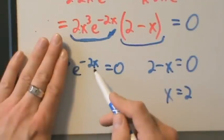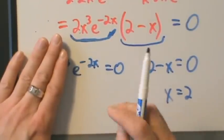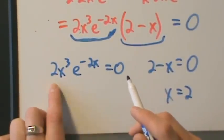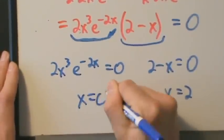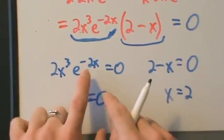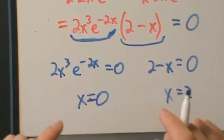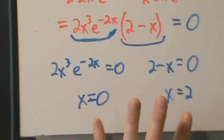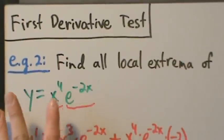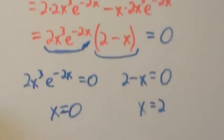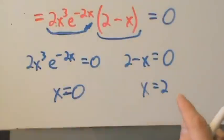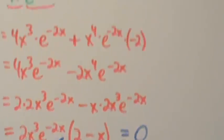For the factor 2x cubed e to the negative 2x equals zero, note that e to the negative 2x is never zero — it's positive for every value of x. So we only need 2x cubed equals zero, which gives x equals 0. Therefore the two critical points are x equals 0 and x equals 2. Since the domain is all real numbers, both are valid. That completes step 1.